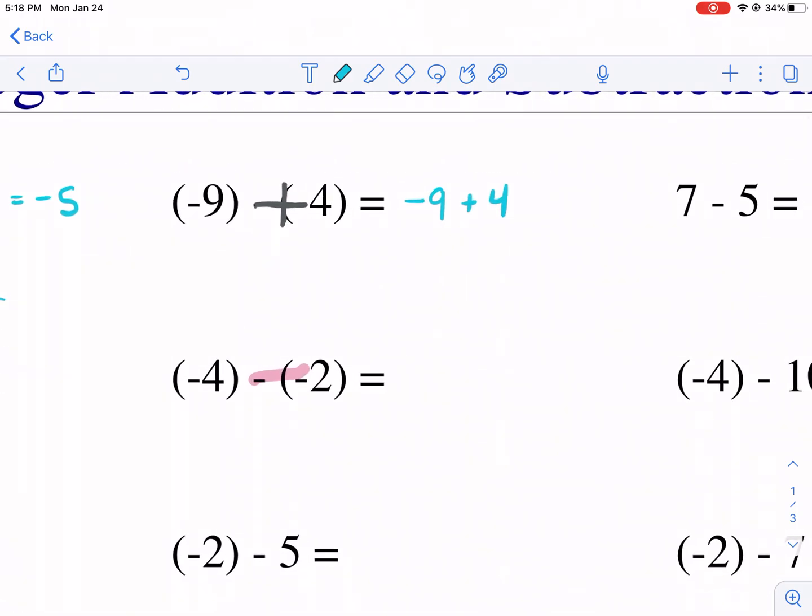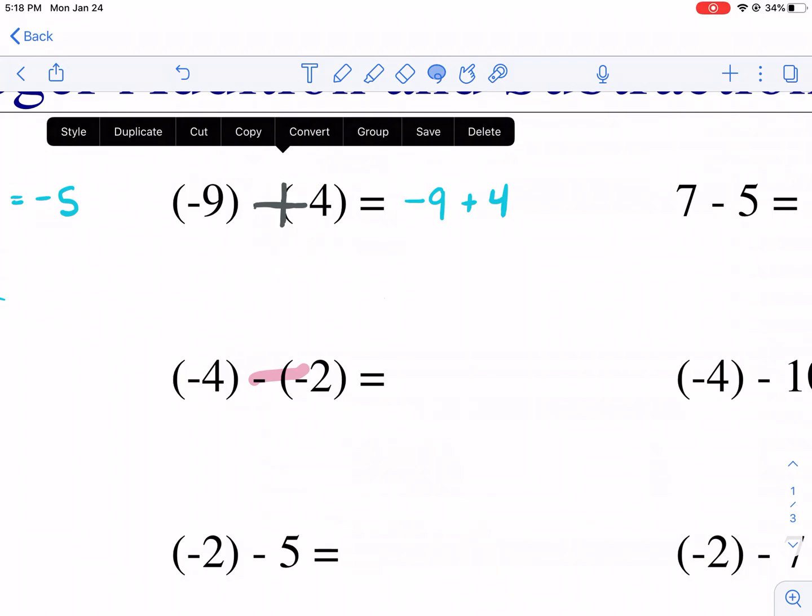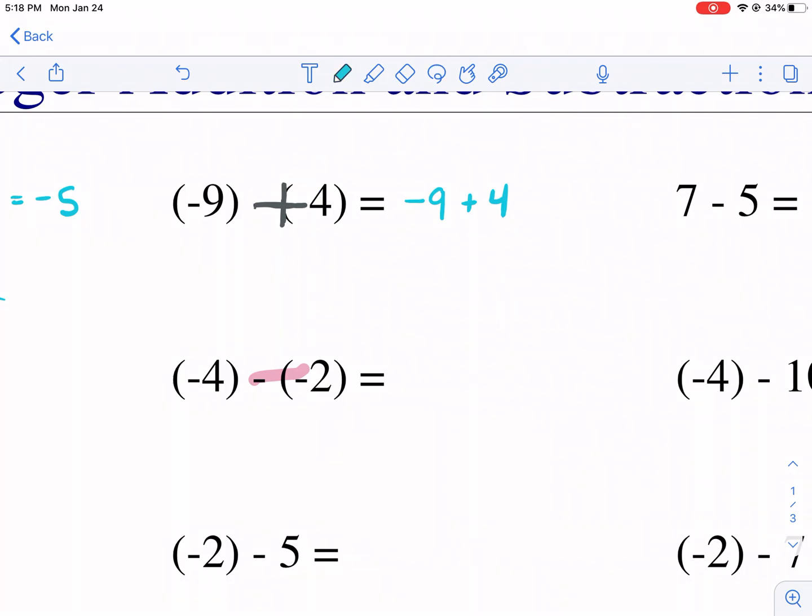Negative nine plus four. So now the first step, make sure you change the sign. We have minus, minus, change that to plus. And then we're going to proceed as normal. So we start on negative nine. There's negative nine. Here's zero.